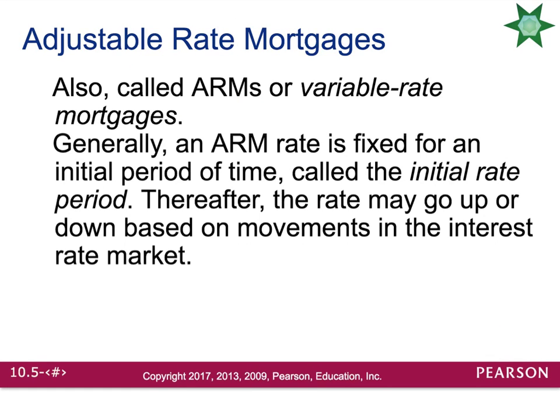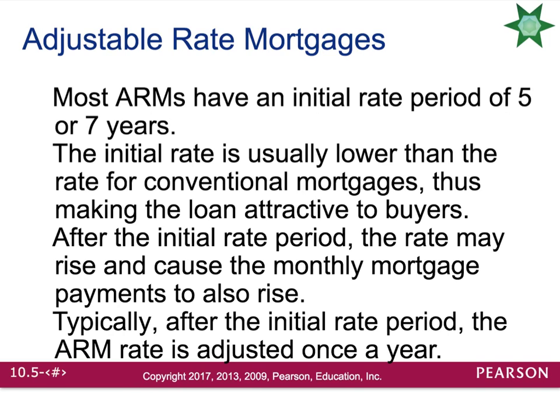Another type of loan is called an adjustable rate mortgage, also known as an ARM. Generally, an ARM rate is fixed for an initial period of time called the initial rate period. After that, the rate could go up or down based on movements in the interest rate market. Most ARMs have an initial rate period of five to seven years, and the initial rate is typically lower than what you would get on a conventional mortgage, which makes the loan attractive to buyers. After the initial rate period, the rate could go up — causing monthly mortgage payments to rise — or it could go down. Typically, after the initial rate period, the ARM rate is adjusted once a year.